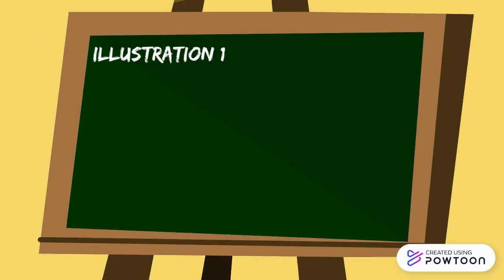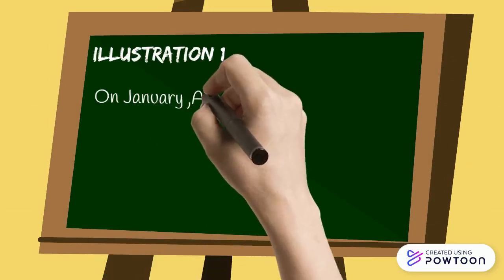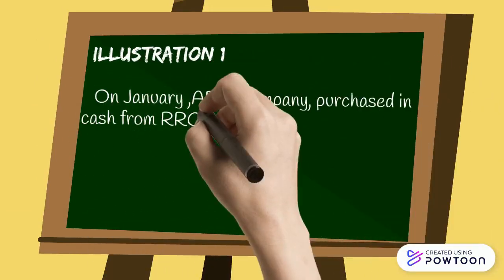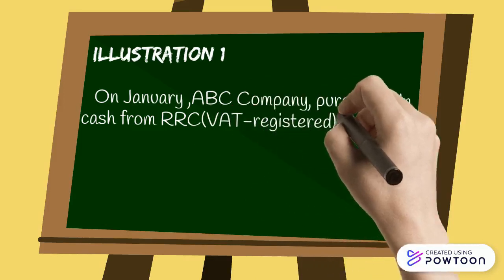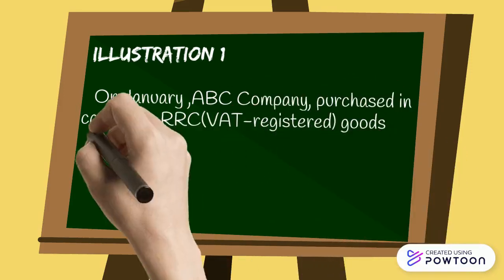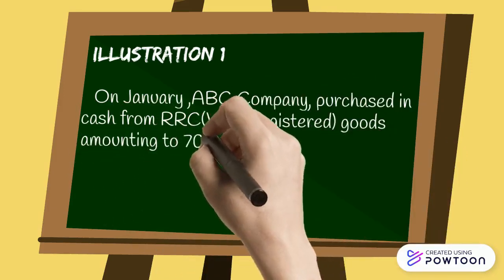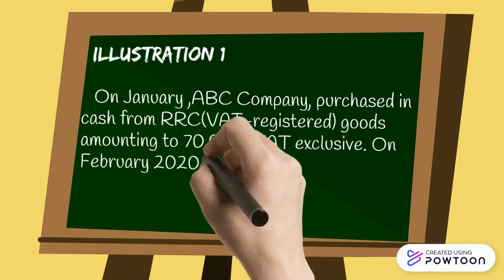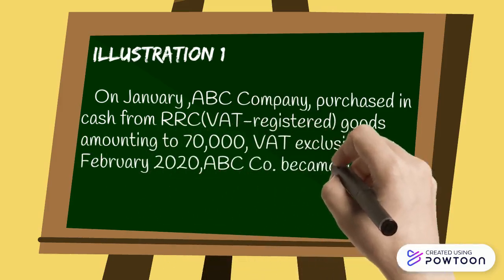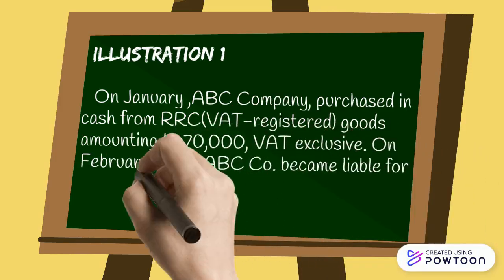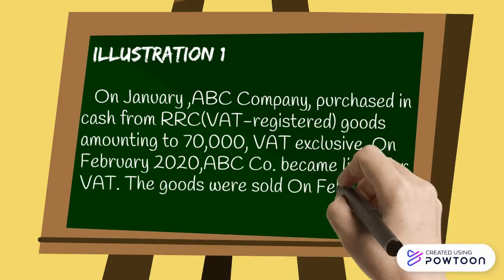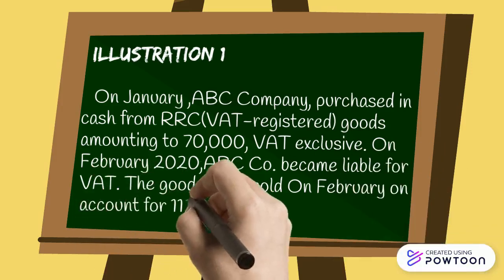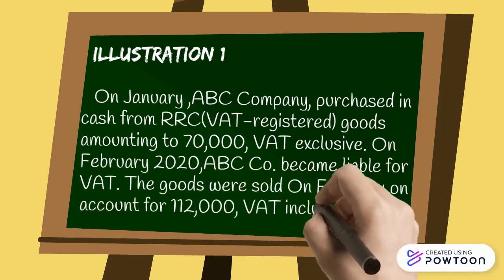Illustration 1. On January, ABC Company purchased in cash from RRC, which is a VAT registered company, goods amounting to P70,000 VAT exclusive. On February 2020, ABC Company became liable for VAT, and the goods were sold in February on account for P112,000 VAT inclusive.